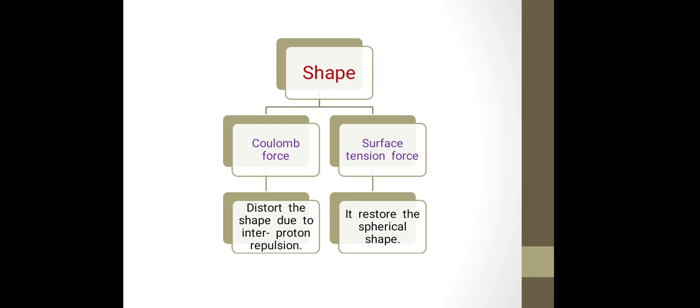Opposite to that, there is a surface tension force that restores the spherical shape. These two are the opposite forces which determine the shape of the atomic nucleus. One distorts the shape and another restores the shape.